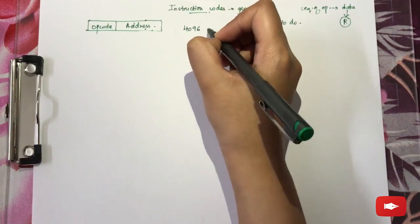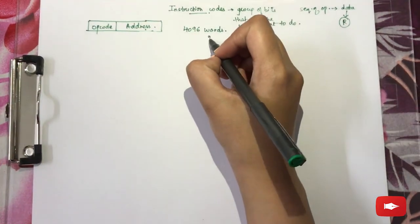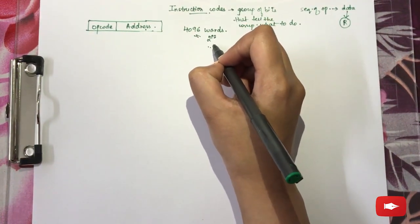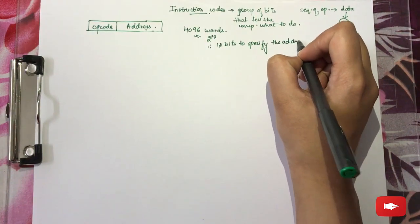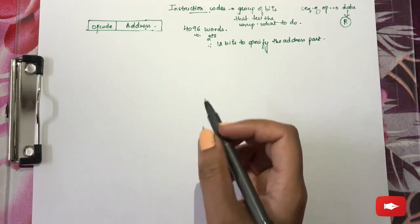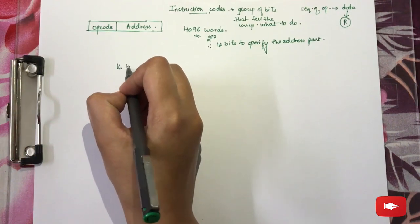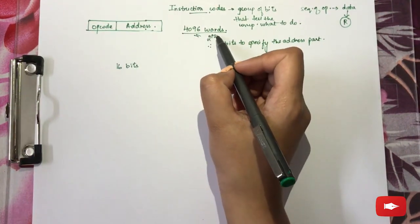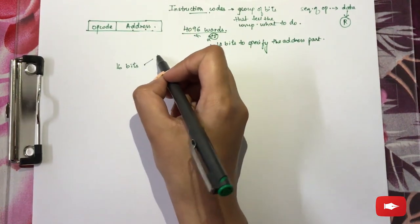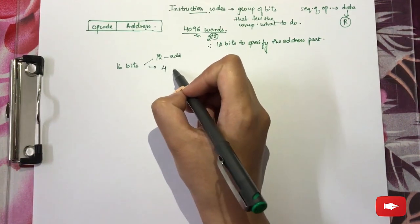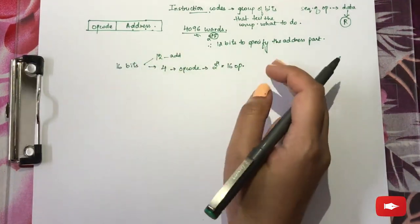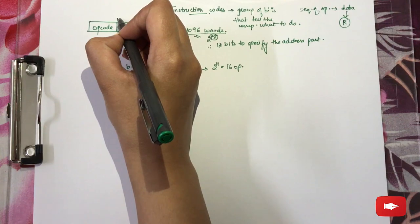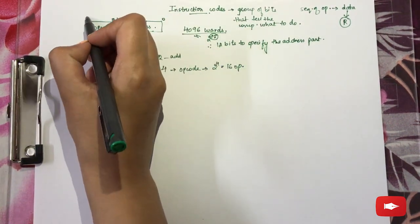For example, if we have a 4096-word section of memory — since 4096 equals 2 to the power 12 — we need at least 12 bits to specify the address part. If we have a 16-bit instruction format, 12 bits go to the address, leaving 4 bits for the opcode, which can specify 2 to the power 4, that is 16 operations. So bits 0 to 11 are the address and the remaining bits are the opcode.